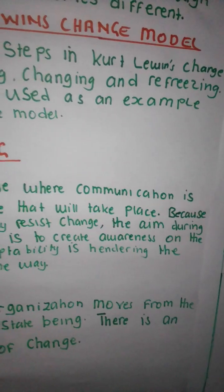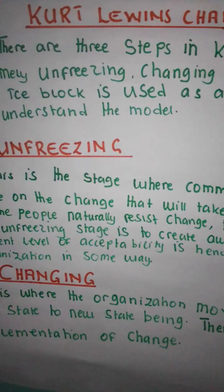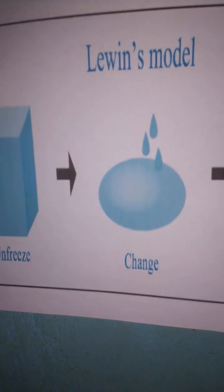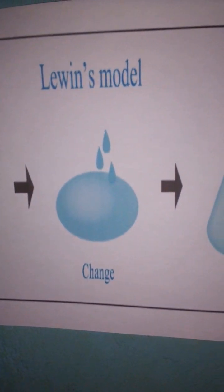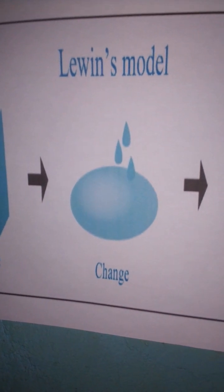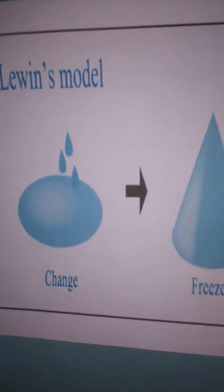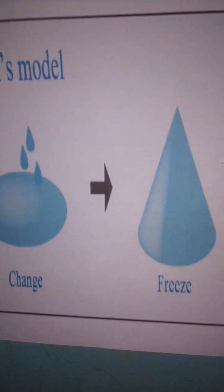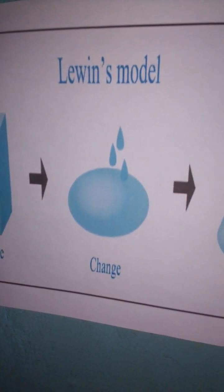An ice block is used as an example to understand this model. Water which has been frozen — for it to change into another shape, it will be very difficult to change it. So we need to unfreeze it. When you unfreeze the water, that's when you can implement the change. When the new shape has been implemented, you freeze it again — you refreeze it. This is the example used in Lewin's change model.